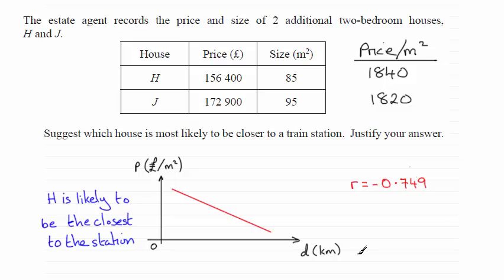Now in the earlier part of this question, we were asked to state the product moment correlation coefficient between P and D, and it turned out to be minus 0.749. So we could expect something like this for the relationship between our points.